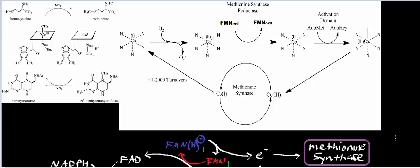Welcome back. Just to review what we were doing in the last video, we were talking about the reaction of methionine synthase. Methionine synthase was one of those few enzymes in humans that's basically going to use vitamin B12. This little square right here represents the center of the corrin ring system that is vitamin B12. At rest, this enzyme has a B12, and the B12 in the center of the corrin ring system has a cobalt, which is a transition metal cation in the one plus oxidation state.